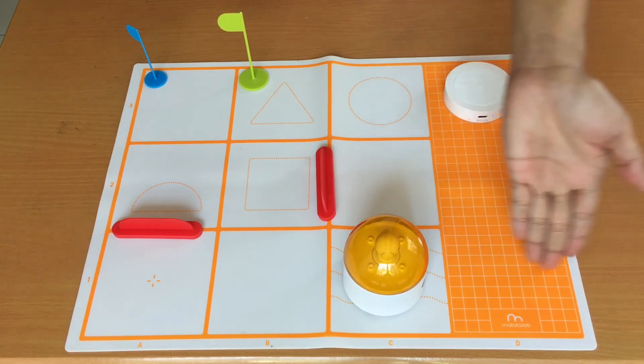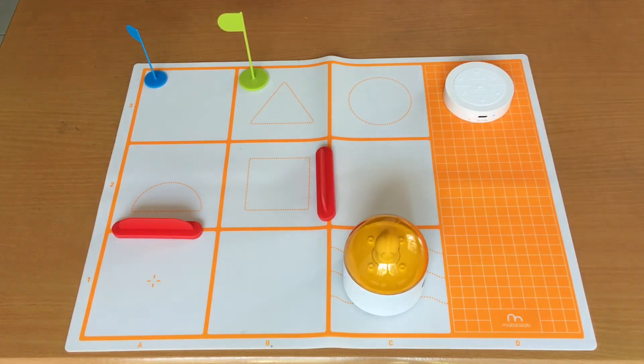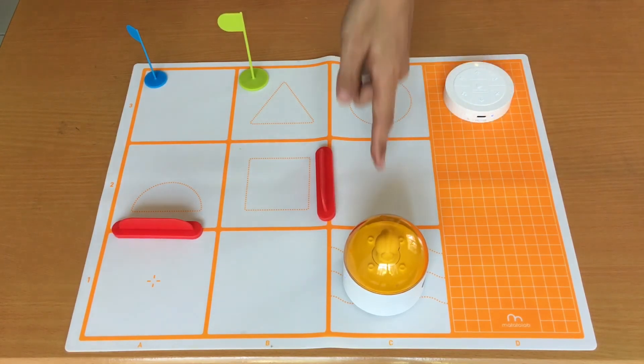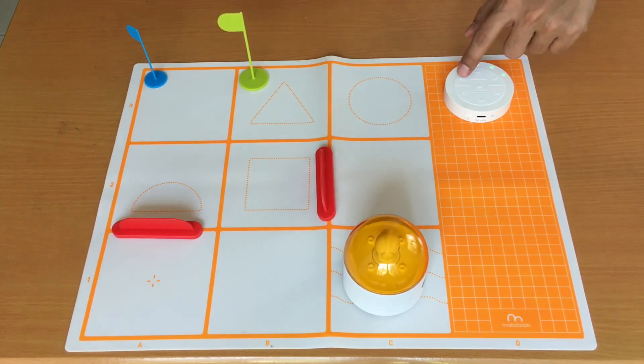So since the Matatabot is facing here, we need to turn it to the left. Just one turn to the left. And then move forward twice. And turn again to the left. And move forward once. And then play music. And then move forward again. Let's see if we did it right. Press the play button.